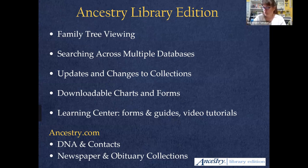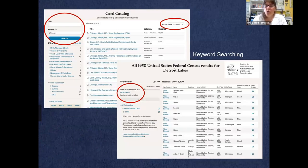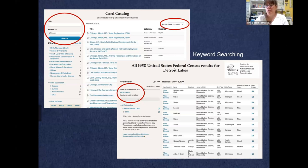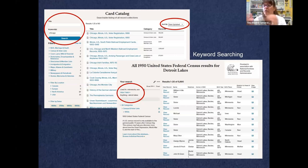Through the library edition we don't get the newspaper and obituary collections, and we don't get DNA results and contacts — but we get about 85% of everything else Ancestry has to offer. You'll notice that when searching on the first homepage, it's not searching all collections. Ancestry has collections that are browse-only, requiring you to be in the card catalog to find them. If you just put in your surname on the first page, you might miss those browse-only collections.